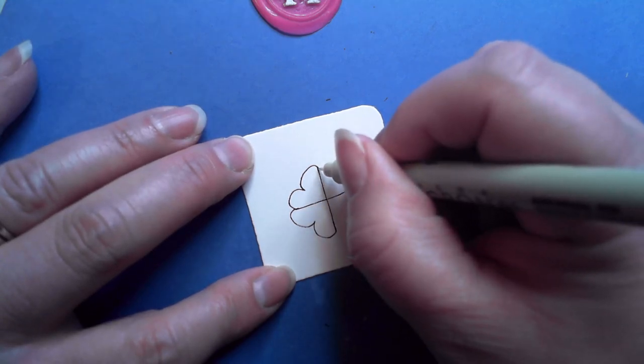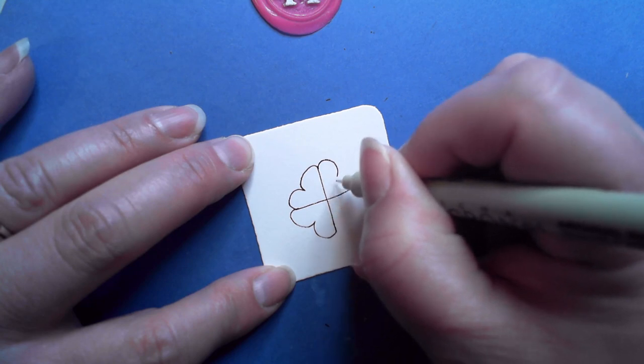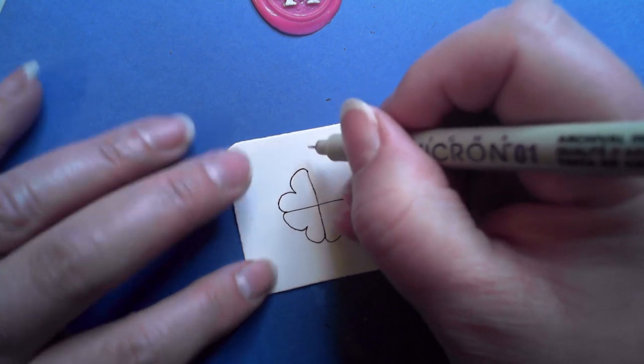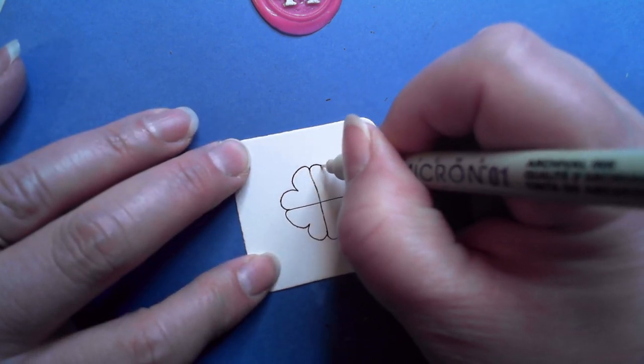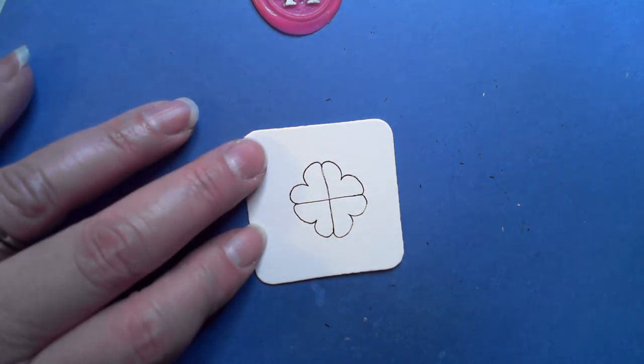Another thing that I aim for, sometimes it works and sometimes it doesn't, is when I'm doing this first C shape, I'm aiming to line it up here, just eyeballing it, and then continuing. That's my goal.